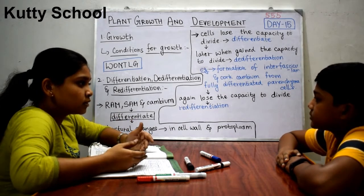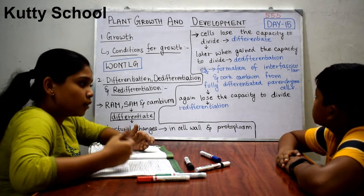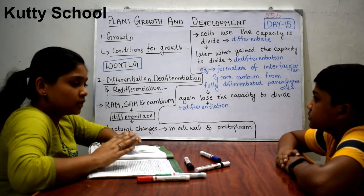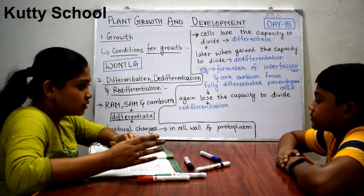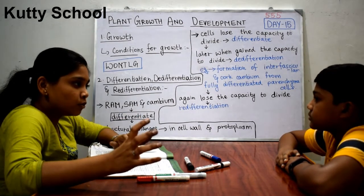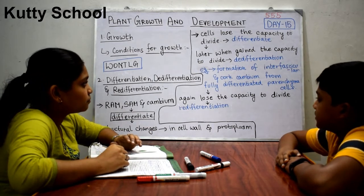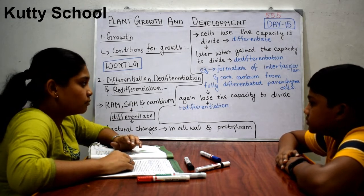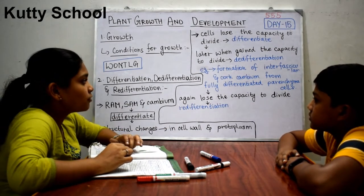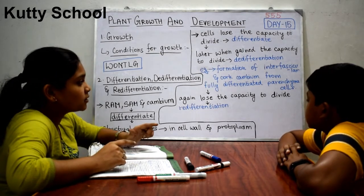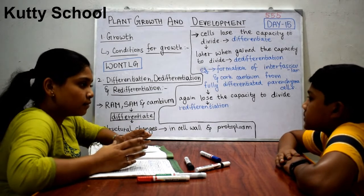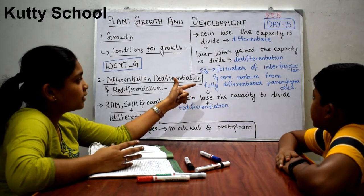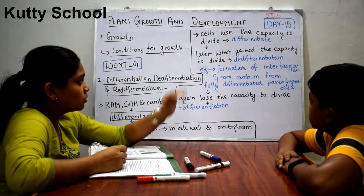The same cells or tissues, after they lose the capacity to divide, can again regain the capacity to divide — that is known as de-differentiation. For example, formation of interfascicular cambium and cork cambium in lateral regions from fully differentiated parenchyma cells. Those parenchyma cells first divided, then differentiated, and then de-differentiated to form interfascicular cambium and cork cambium.